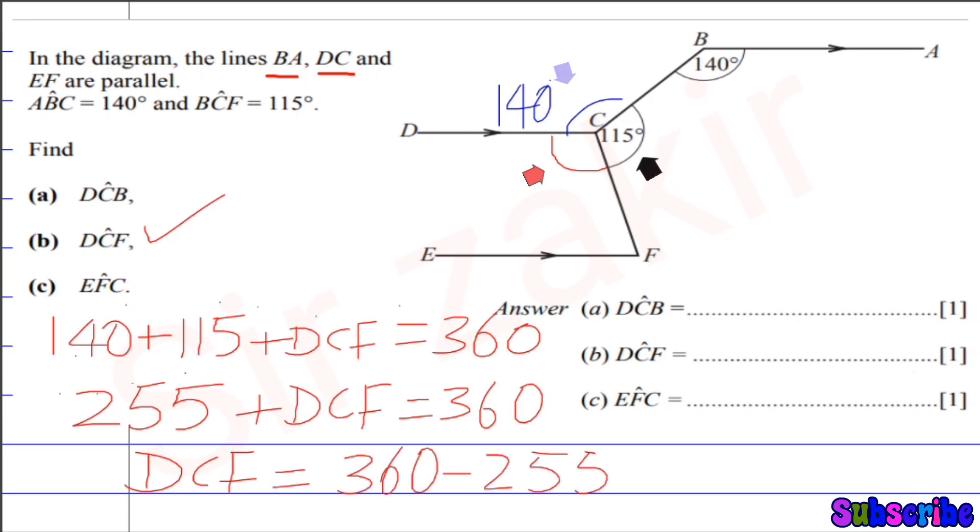So simple subtraction gives us 5 here, 0 here, and 1 here. So angle DCF is 105.